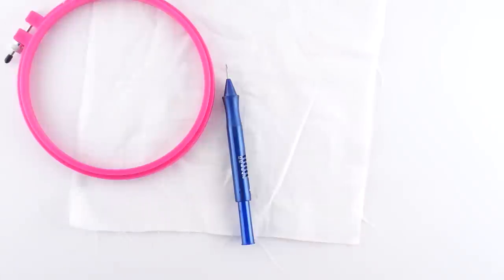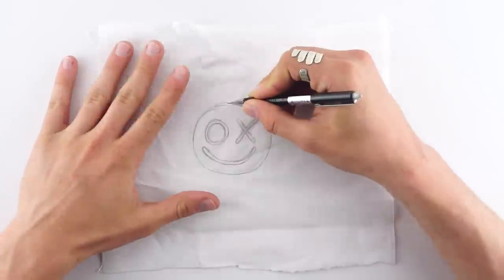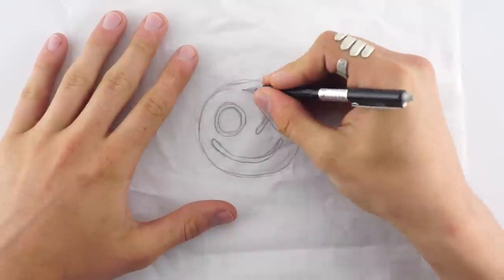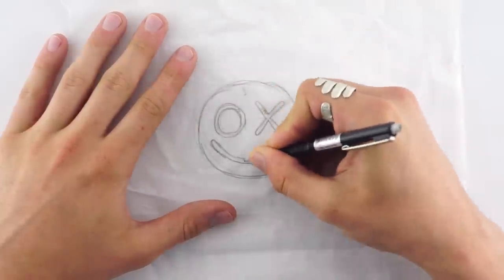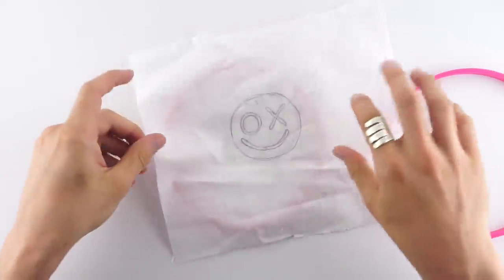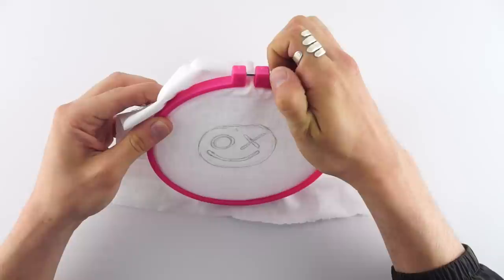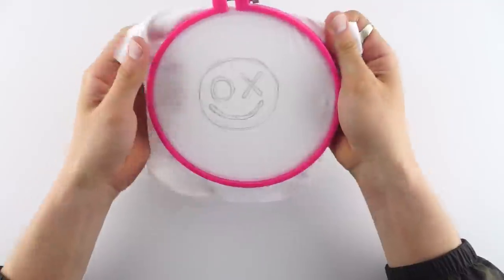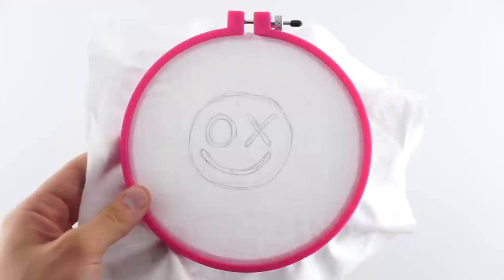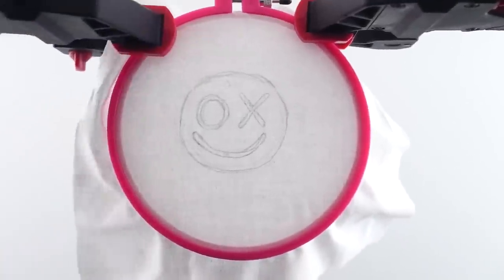I have the fabric, a hoop, punch needle, and floss. First thing I did was I drew on the fabric and labeled what colors are gonna go where, like the color numbers. With the fabric over the small hoop, you can then get your larger hoop, loosen it, put it on top, and make sure it's nice and tight.